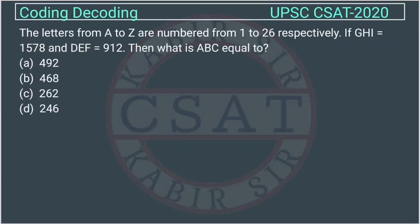This question is from the reasoning chapter on coding and decoding, asked by UPSC in their CSAT paper of 2020. This is an important question. The letters from A to Z are numbered from 1 to 26 respectively.